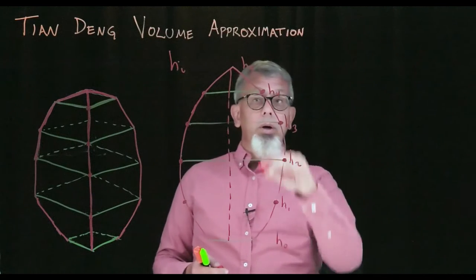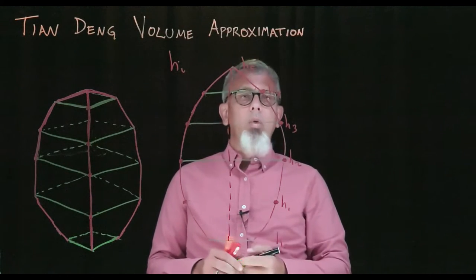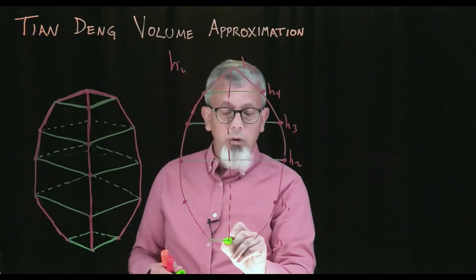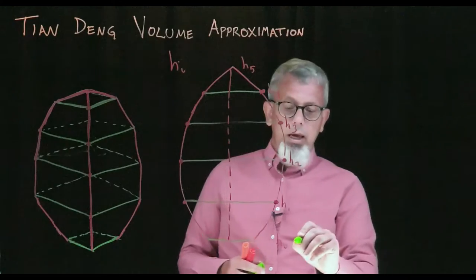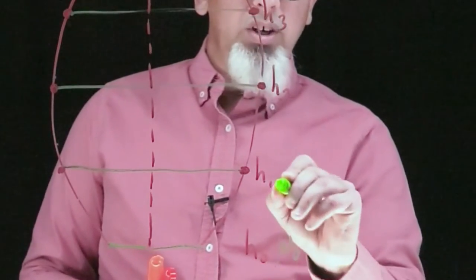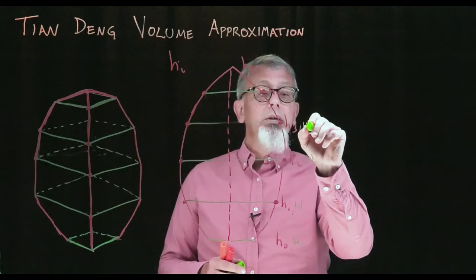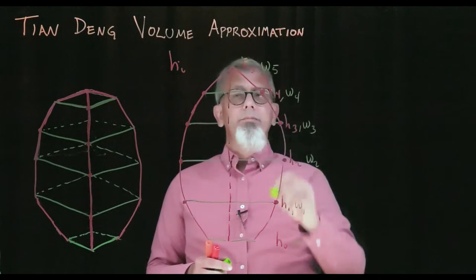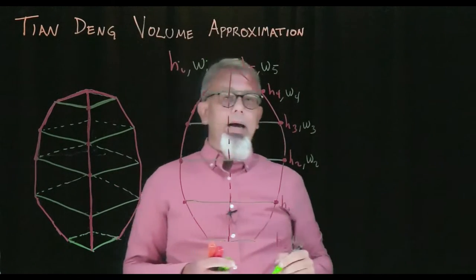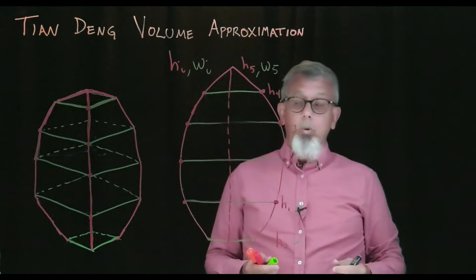For each of those heights, we have a corresponding width that goes all the way across the lantern. We'll label those w0, w1, w2, w3, w4, and w5, or our wi, where i is just a generic index indicating one of those points.